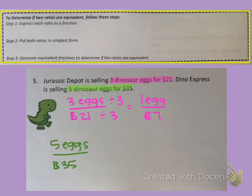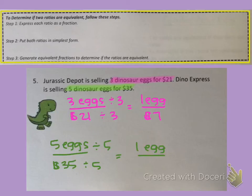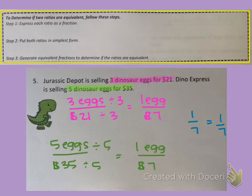And in the other ratio, five eggs and $35 — both of those are divisible by five, so I have one egg for $7. Now we need to determine if these two ratios are equivalent. Is it true that one-seventh equals one-seventh? Yes, it is. So both of these ratios are equivalent.